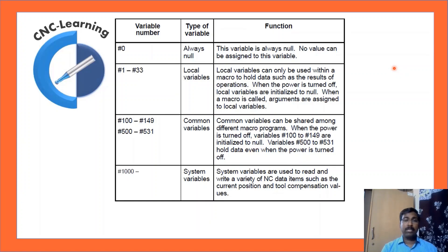Now, this is a table to show what are the different types of variable. #0 is a null variable. That means there is no value. #1 to #33 are called local variables. Local variables can only be used within a macro to hold data such as the results of operation. What happens is, when the machine power is turned off, these local variables are also initialized to null. I mean that value is not stored in the memory.